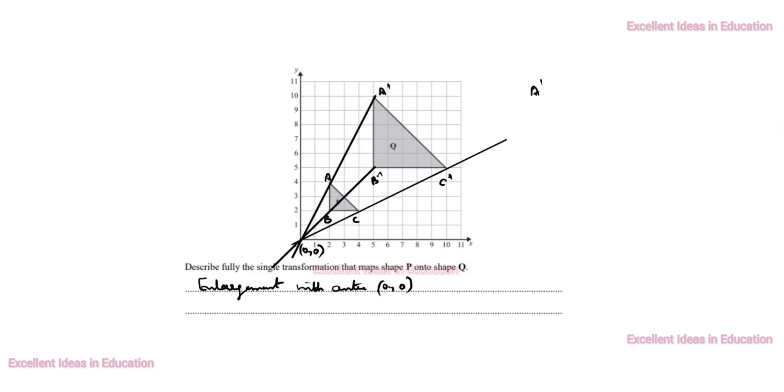A dash, B dash divided by A, B equal to. What is A dash, B dash value? 1, 2, 3, 4, 5. So, we will write 5. What is A, B value? 1, 2. We will write 2.